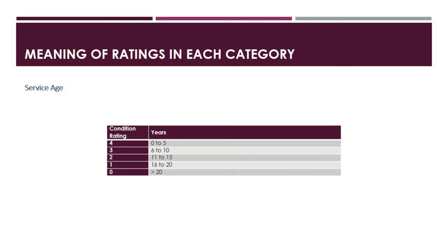Now let us go over the categories that make up the health index. The first one is service age. A rating of 4 is given to any arrestors younger than 5 years. A rating of 3 is given to arrestors between 6 to 10 years. A rating of 2 is given to arrestors 11 to 15 years. A rating of 1 is given for 16 to 20 years. Any arrestors older than 20 years are assigned a rating of 0.